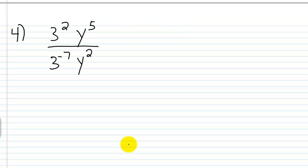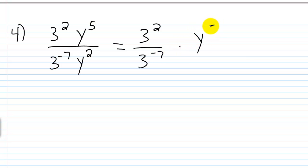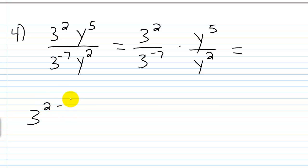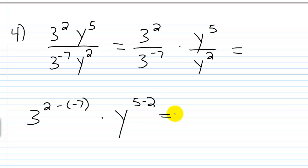For the fourth problem, we have 3 squared times y to the fifth power over 3 to the power of negative 7 times y squared. We separate this as 3 squared over 3 to the power of negative 7, times y to the fifth power over y squared. For the y terms: 5 minus 2 gives y to the third power. For the 3 terms: keep the base 3 and subtract — 2 minus negative 7 — giving 3 to the ninth power. So the result is 3 to the ninth power times y to the third power.